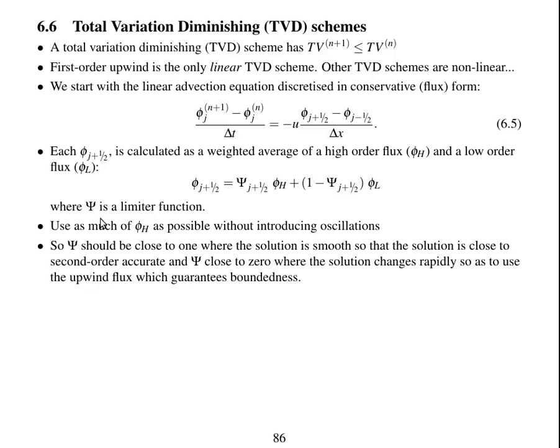We want to use as much of the high order flux as possible without introducing oscillations. So the limiter function Ψ should be close to 1 where the solution is smooth, so we get the high order flux and second order accuracy.